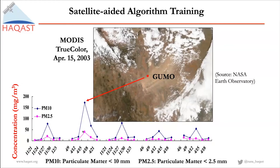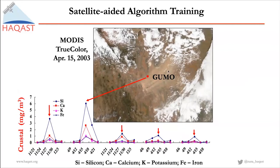Looking at PM10 and PM2.5 concentration before, during, and after dust storms, it's very clear that when you have a dust storm, you see a spike of both PM10 and PM2.5 concentration — which is intuitive. Besides PM concentration increases, you also see changes in chemical composition. For example, silicon, calcium, potassium, and iron — all called crustal elements — mostly come from soil. When you see a spike of PM2.5, you also see concurrent spikes of all those elements, meaning everything comes from the same source: soil.